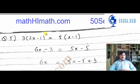Let's start with question number 5 of exercise 4.1. The statement of this question is 3 times 2x minus 1 equals 5 times x minus 1.